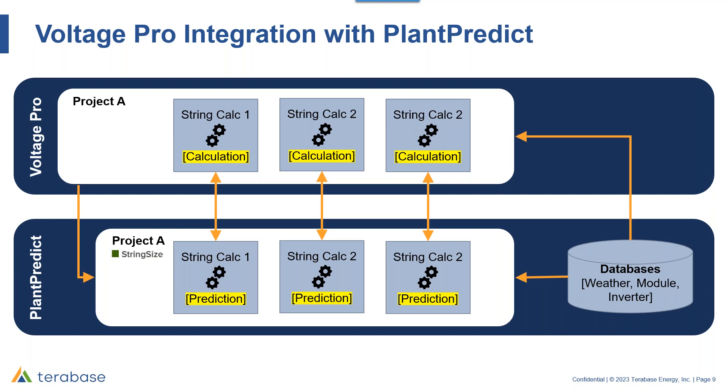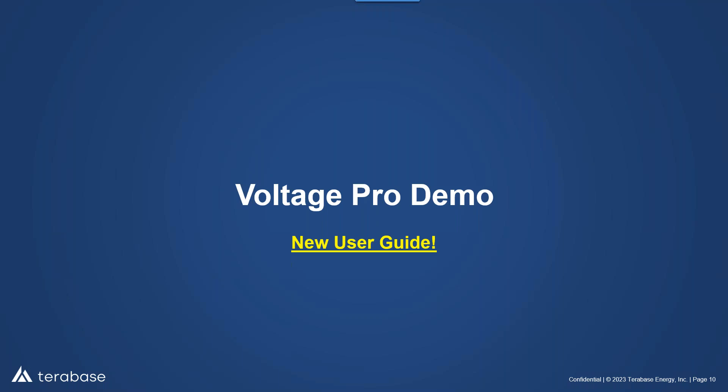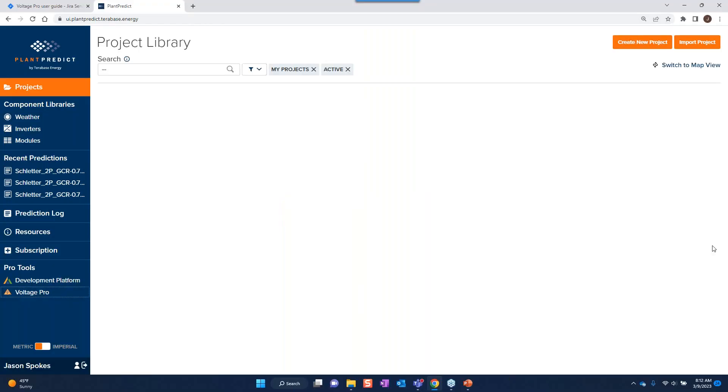If you want to see the underlying open circuit data for each time step, you can access this within the PlantPredict prediction — saved within the DC fields nodal data and downloadable in Excel. The module, inverter, and weather databases within PlantPredict are also accessible within Voltage Pro, so these are not two separate databases. Now that we have a basic understanding of Voltage Pro's relation to PlantPredict, we're going to take it for a live spin. We've just published a new in-depth user guide as of yesterday, which should help describe how to use Voltage Pro and explain the underlying models and equations.